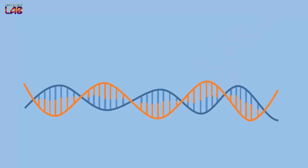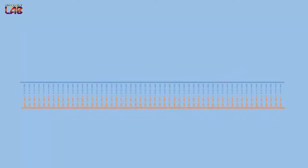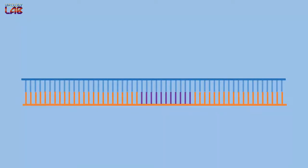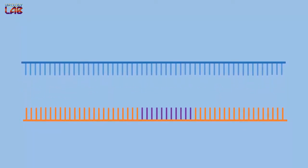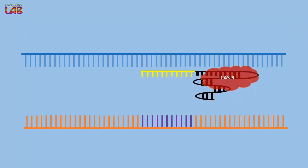After PAM identification, the spiral DNA helix unwinds by the action of Cas9. Guide RNA tagged with Cas9 immediately finds its complementary sequence and binds to it.